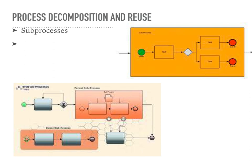Collaboration — subprocesses can be assigned to specific roles or departments, facilitating collaboration and coordination among different stakeholders responsible for different parts of the process. Subprocesses should be used when there is a need to simplify complex process flows, improve modularity, promote reuse, or encapsulate a specific set of activities with a distinct purpose. They are particularly useful when dealing with repetitive patterns, exception handling, or subprocesses shared across multiple processes. By utilizing subprocesses effectively, one can enhance the clarity, maintainability, and flexibility of one's BPMN process models.